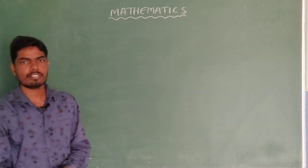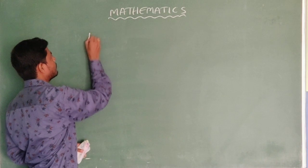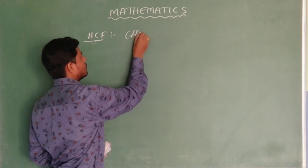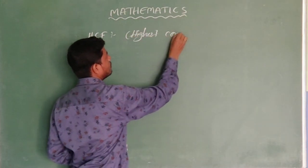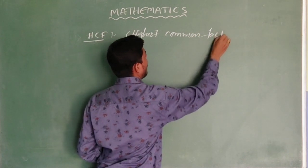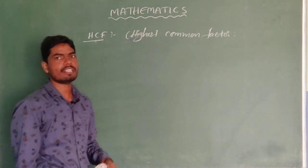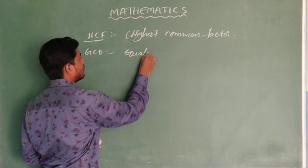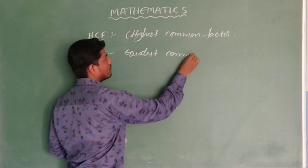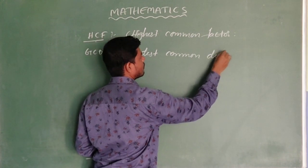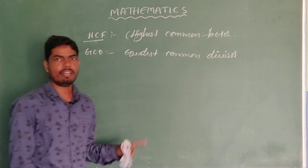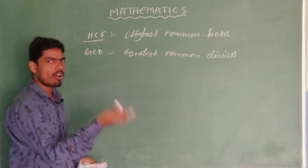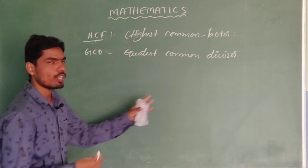The next concept in this process is HCF. HCF stands for Highest Common Factor. This method is also called the Greatest Common Divisor, that is GCD. So how to find this? It has two methods: one is the Long Division Method and the other is the Prime Factorization method. First, we will go with the Long Division Method.